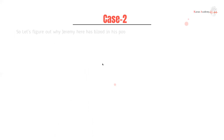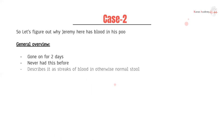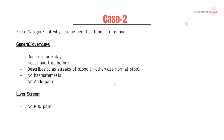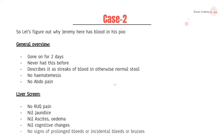General overview: this has been going on for two days and he's never had it before. He describes it as streaks of blood in otherwise normal stool — this makes me think a lower GI bleed, because with an upper GI bleed I would expect more digested, melena-looking blood. He's had no hematemesis, consistent with a lower GI bleed. He doesn't have any abdominal pain. Quick liver screen: no right upper quadrant pain, no jaundice, no ascites or edema, no cognitive changes, no signs of prolonged bleeding. His liver seems to be working fine.